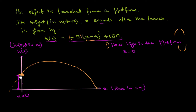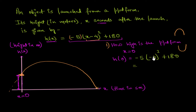We start our time at 0, so we find h of 0. That gives us negative 5 times 0 minus 4 whole square plus 180, which is negative 5 times negative 4 whole square plus 180. Negative 4 squared is 16; 16 times negative 5 is negative 80; negative 80 plus 180 equals 100. So the platform height is 100 meters.